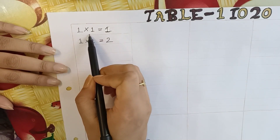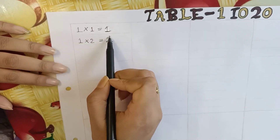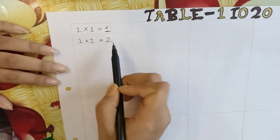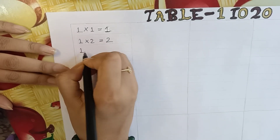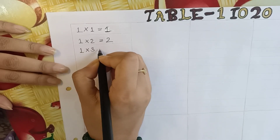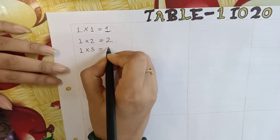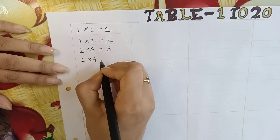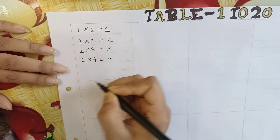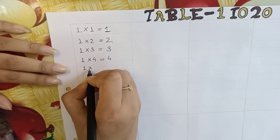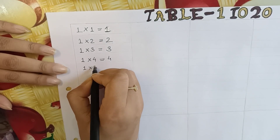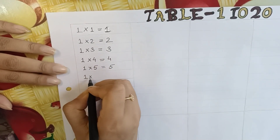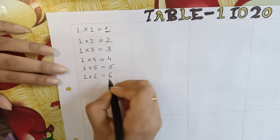1 into 1 is equal to 1. 1 into 2 is equal to 2. 1 into 3 is equal to 3. 1 into 4 is equal to 4. 1 into 5 is equal to 5. 1 into 6 is equal to 6.